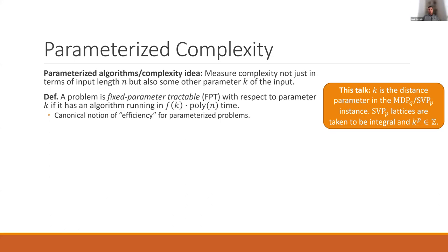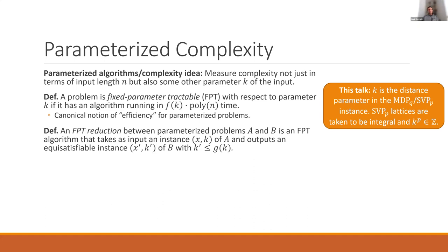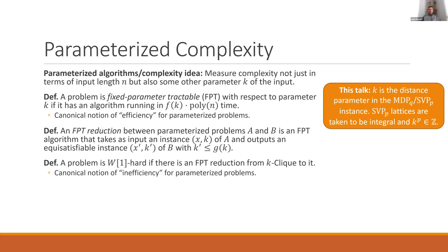FPT is the canonical notion of efficiency for parameterized problems — the equivalent of P in the non-parameterized world. We also have FPT reductions between parameterized problems: we take an instance of one parameterized problem as input, run an FPT algorithm, and output an equi-satisfiable instance of another problem, mapping yes instances to yes instances and no instances to no instances. Crucially, the parameter k' in the output instance must not depend on n — the length of the input — only on the parameter k of the input instance.